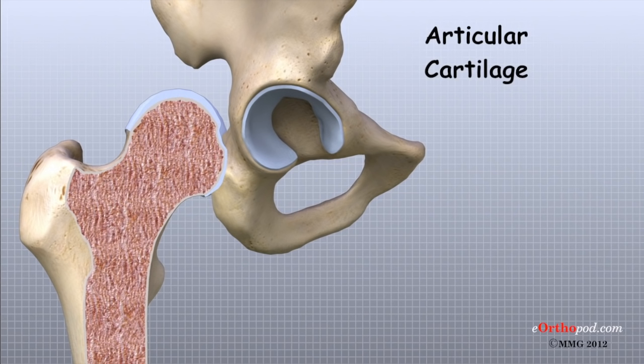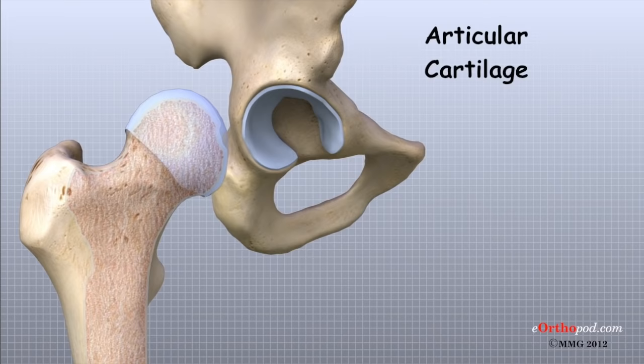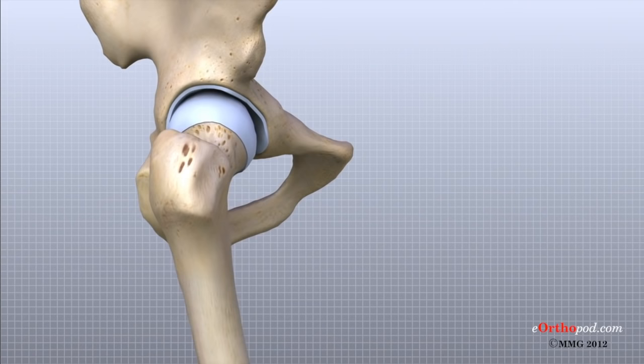We have articular cartilage essentially everywhere that two bony surfaces move against one another or articulate. In the hip, articular cartilage covers the end of the femur and the socket portion of the acetabulum in the pelvis. The cartilage is especially thick in the upper and back part of the socket, as this is where most of the force occurs during walking and running.